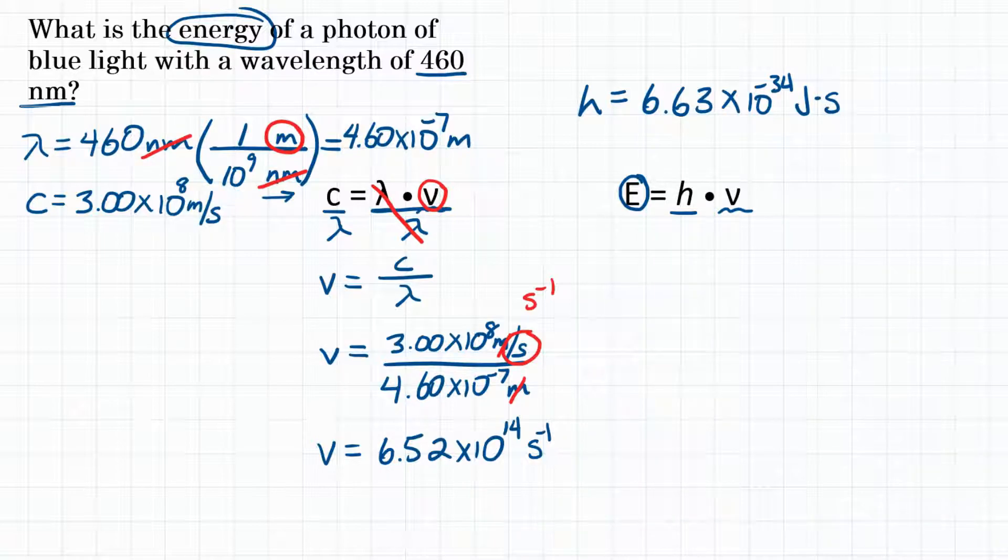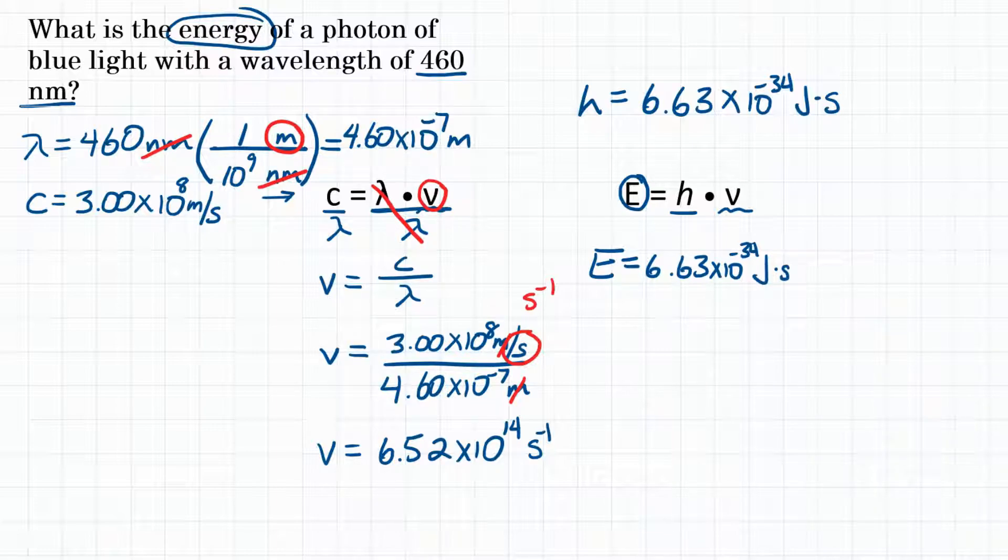Let's plug that and frequency into our equation. We have E energy equals Planck's constant, 6.63 times 10 to the negative 34th joules seconds, times frequency. We solved for that first, and it is 6.52 times 10 to the 14th, and the units are seconds to the negative 1 power.